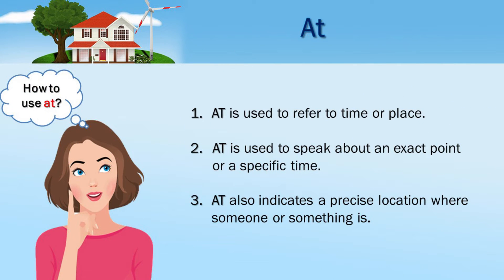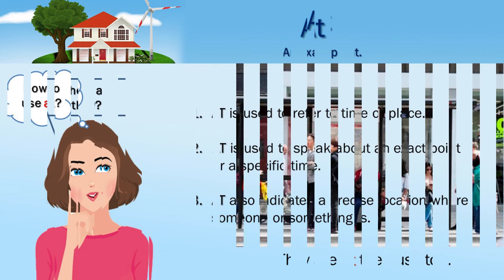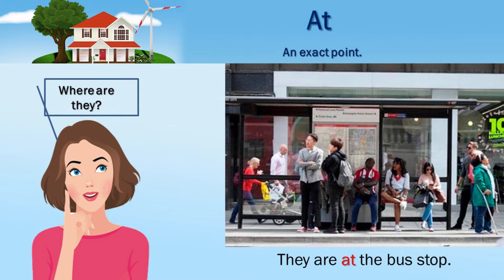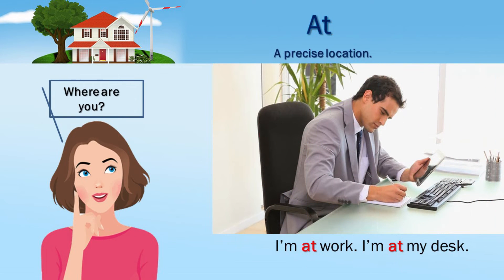At: 1. 'At' is used to refer to time or place. 2. 'At' is used to speak about an exact point or a specific time. 3. 'At' also indicates a precise location where someone or something is. At — an exact point: Where are they? They are at the bus stop. At — a precise location: Where are you? I'm at work. I'm at my desk.